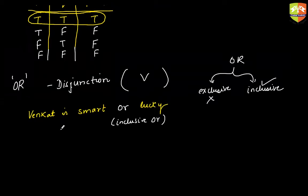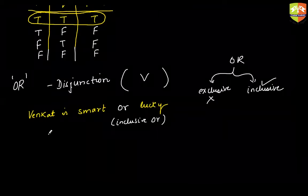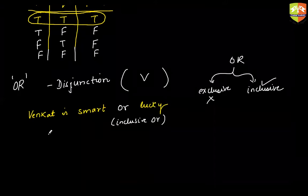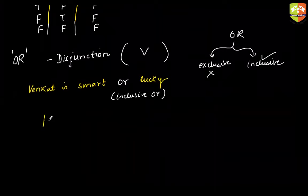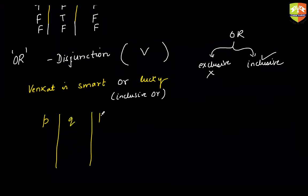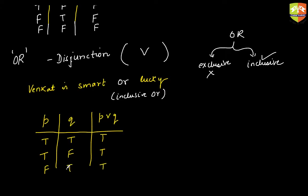Please note that not every 'or' acts as a connector. Regarding the truth table of disjunction: it is true when both are true, true when one is false, true when one is false, and false only when both are false. The disjunction is false only when both component statements are false.